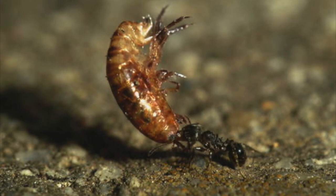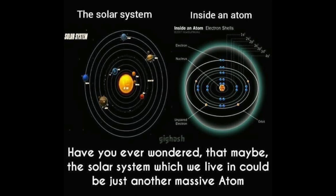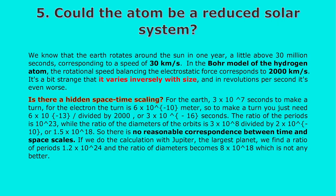Point five: could the atom be a reduced solar system? That's what we hear sometimes. To examine this hypothesis, I propose a small calculation. We know that the Earth rotates around the Sun in one year — a little above 30 million seconds — corresponding to a speed of 30 kilometers per second. In the Bohr model of the hydrogen atom, the rotational speed balancing the electrostatic force corresponds to 2,000 kilometers per second.